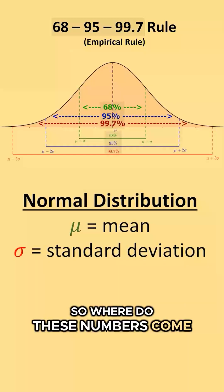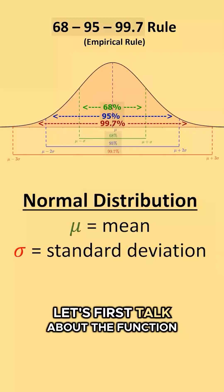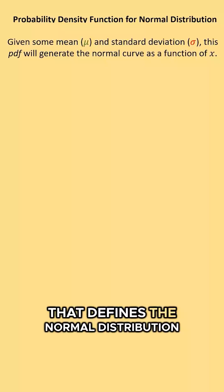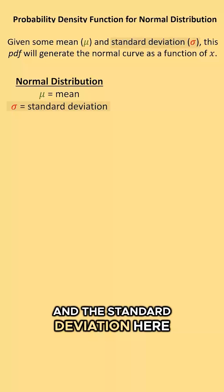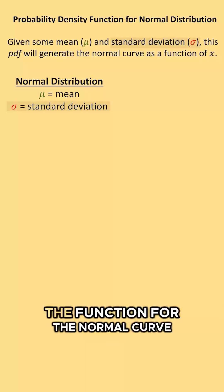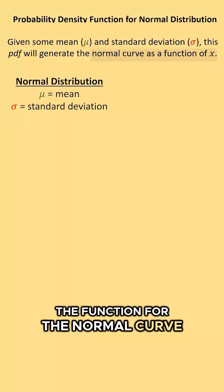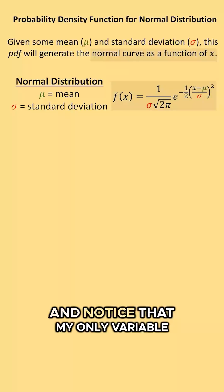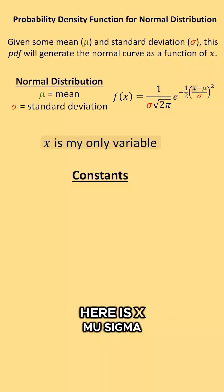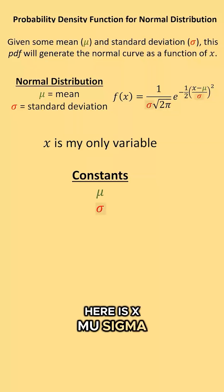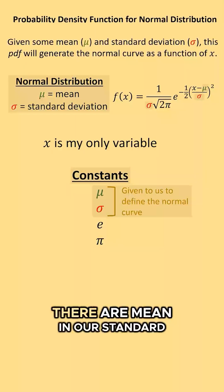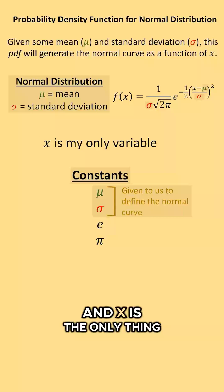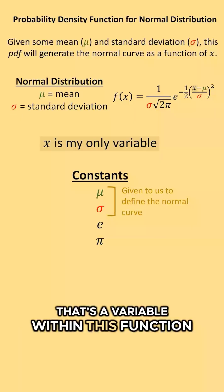So where do these numbers come from? Let's first talk about the function that defines the normal distribution. For any normal distribution, the mean is represented by mu and the standard deviation is represented by sigma. The function for the normal curve is this function here, and the only variable is x. Mu, sigma, e, and pi are all numbers — mu and sigma will be given to us as the mean and standard deviation — and x is the only variable within this function.